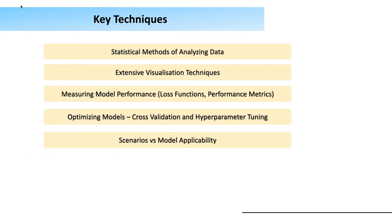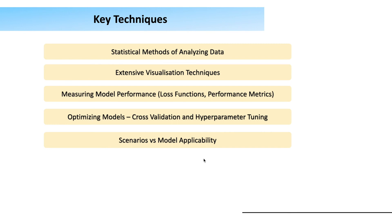Some key techniques you'll learn during the course include statistical methods for analyzing data, extensive visualization techniques, and measuring model performance. You'll learn how to use machine learning algorithms to create models and how to measure and optimize model performance using loss functions, performance metrics for regression and classification problems, cross-validation, and hyperparameter tuning. You'll also see scenarios for determining which learning algorithms are applicable for which kind of problem-solving.